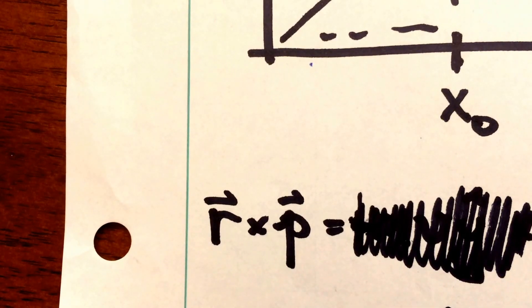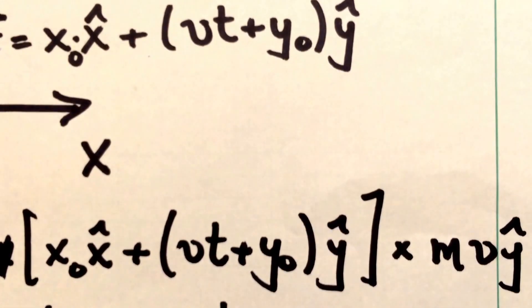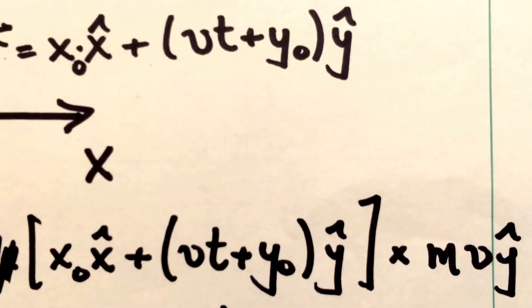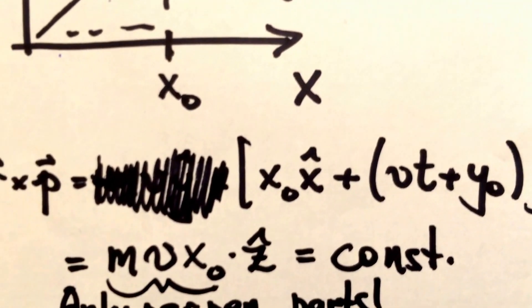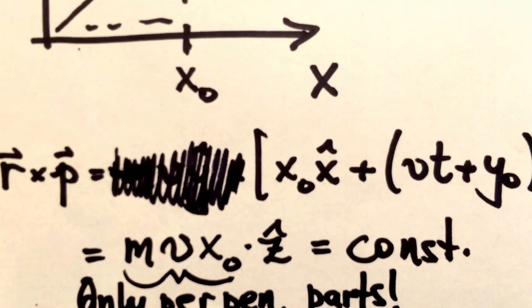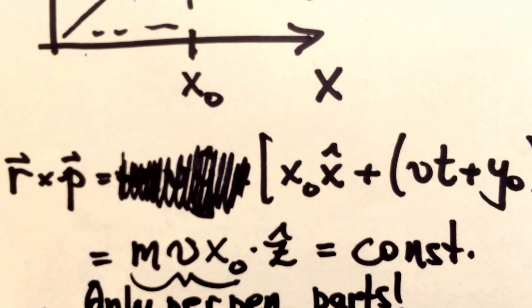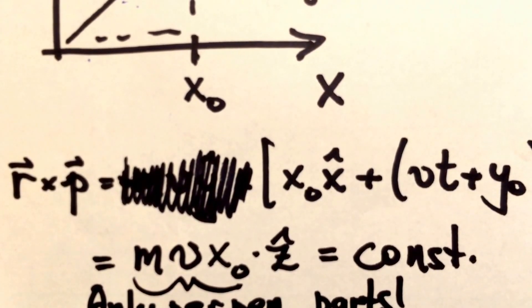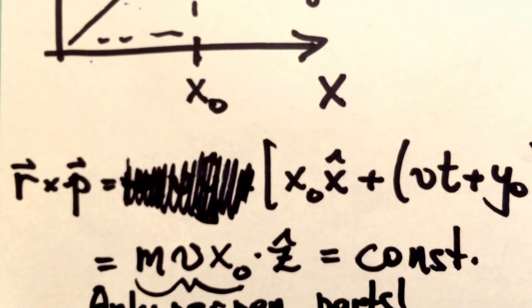We calculate the angular momentum for this particle. We see it's r crossed into p. Here's what that cross product looks like. Here's r on the left and p on the right. And when we take that cross product, what we find is the angular momentum for this particle is mv, so the mass times the velocity, times the position x naught times z hat.